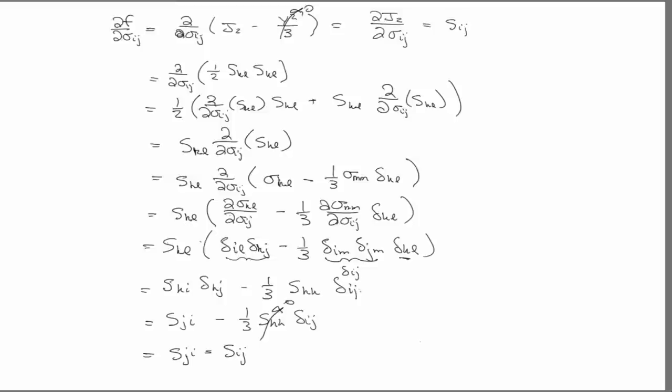Basically, just keep in mind where we are is that we have this flow rule, d epsilon p is equal to d lambda partial f partial sigma i,j, which now we can say is d lambda s,i,j. And so, this is where we'll pick up next time.